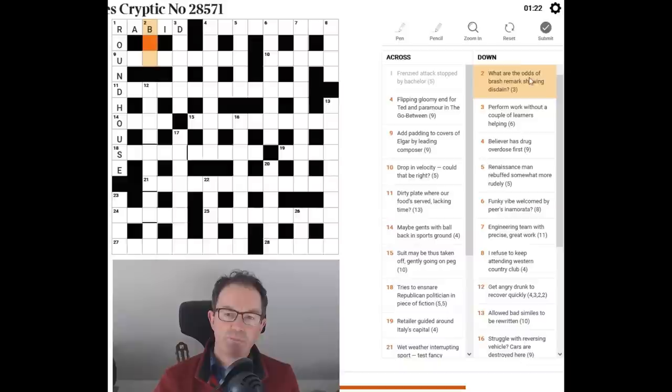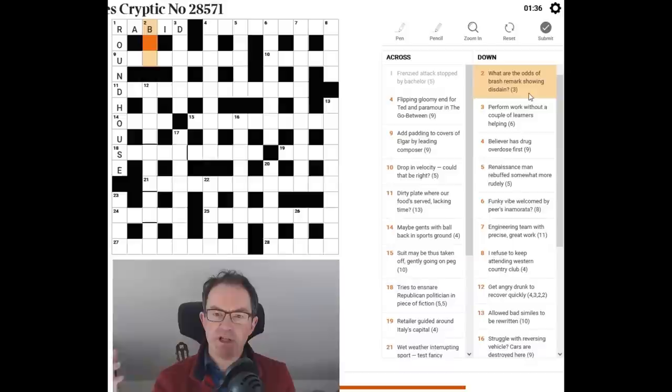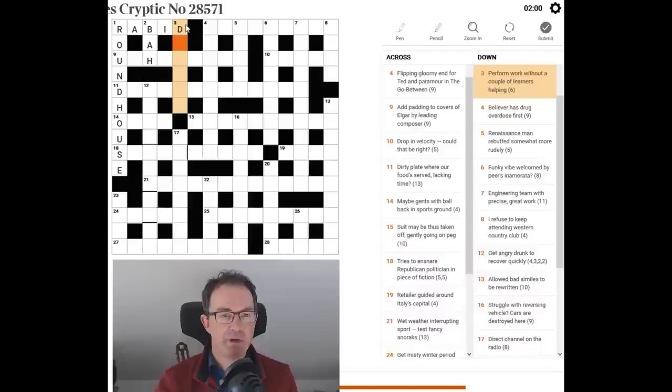And we've actually this amazing start because we've got all of these starting letters. What are the odds of brash remark showing disdain? Be on alert for this sort of clue because it comes up fairly often. When you see odd and even in cryptic crossword clues often it's saying take the odd numbered letters or take the evenly numbered letters in a phrase. And if we take the odd letters of the word brash we get B-A-H, bah as in bah humbug. And that's certainly a remark to show disdain isn't it?